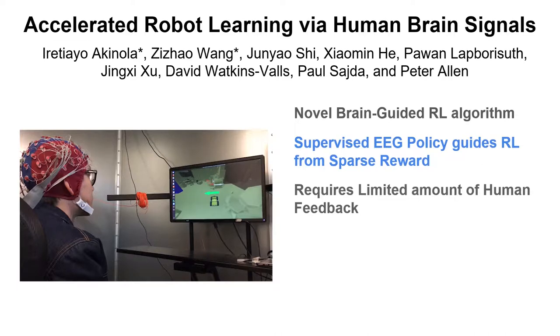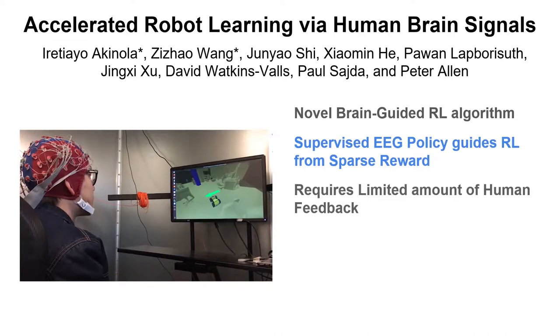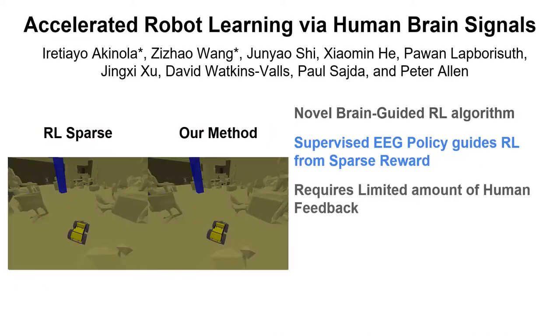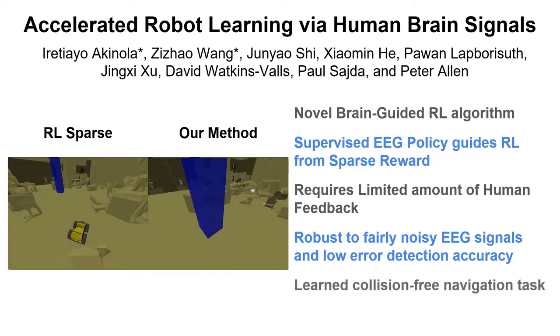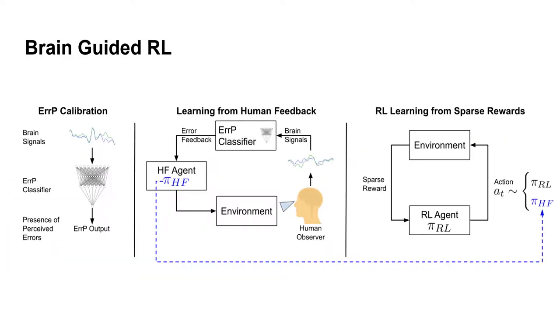Our algorithm does not require the human to be present throughout the entire learning process, and the approach is robust to fairly noisy EEG signals and low error detection accuracy. Our brain-guided RL agents successfully learned an obstacle-avoidance navigation task. Our algorithm has three stages.